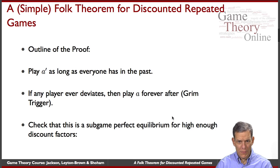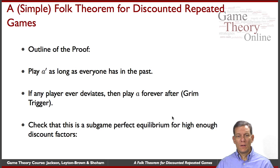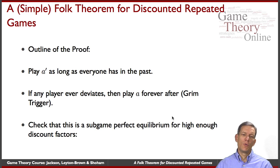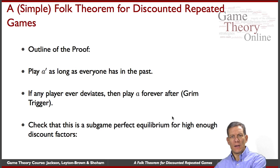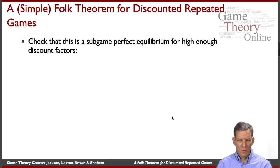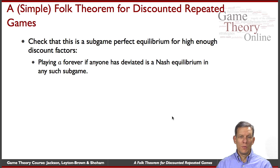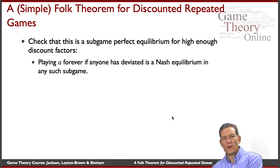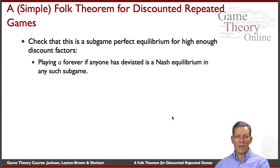The proof of this theorem is very similar to what we went through in those examples. We'll play A prime as long as everybody plays it. If anybody deviates, we go to a grim trigger — we threaten to play the Nash equilibrium A forever after, which gives a lower payoff than A prime. We just need to make sure people care enough about the loss of the future to offset the gain from today. Playing A forever after any deviation is part of a subgame perfect continuation because it's Nash in every subgame.